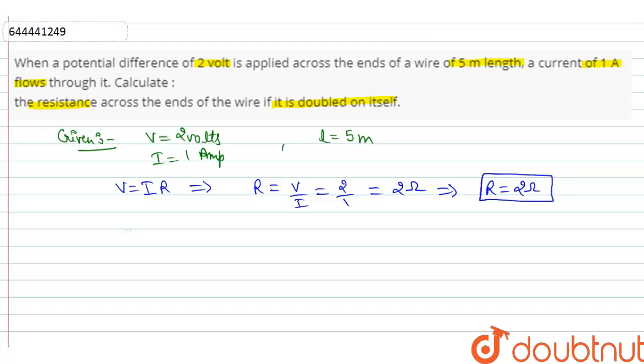Now, according to relation, ρ (rho) equals RA over L. The value of ρ is: ρ equals 2 times A1 over 5. We'll give this as equation number 1.